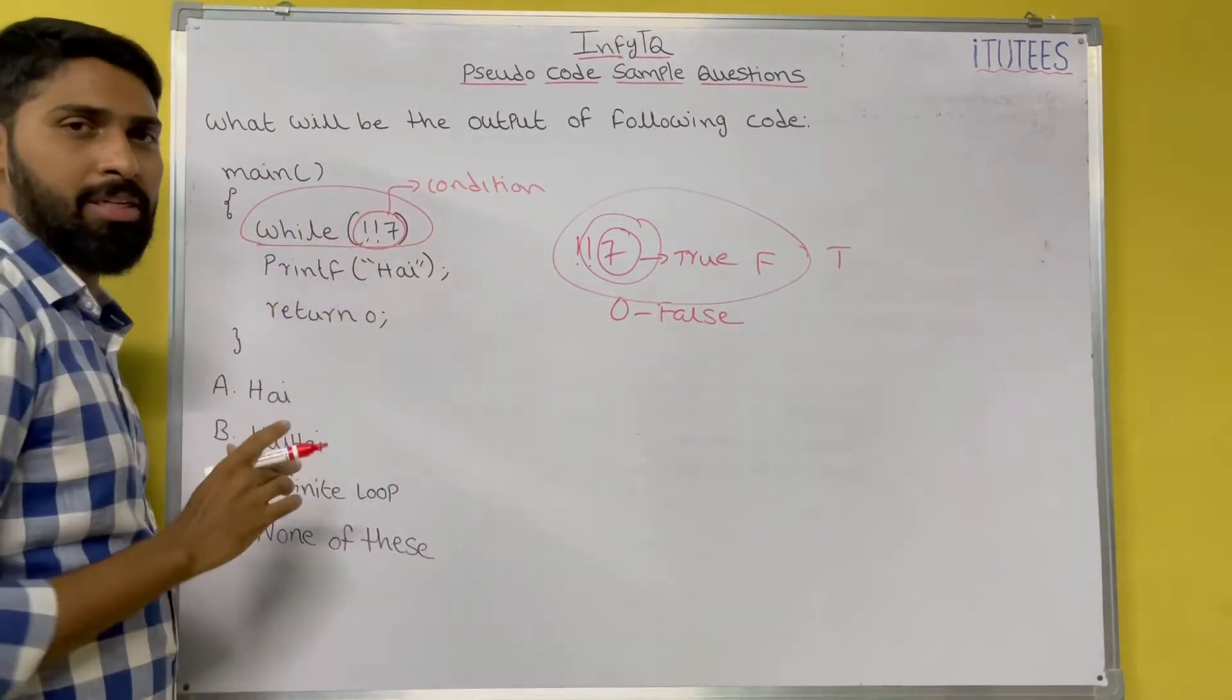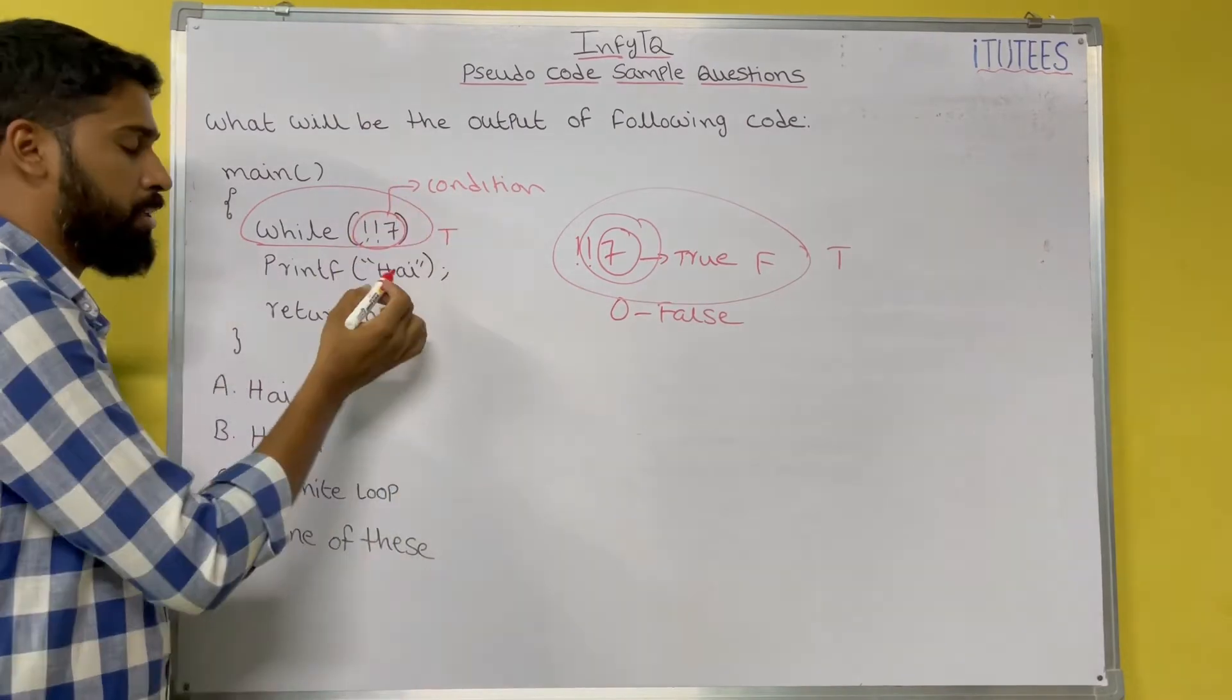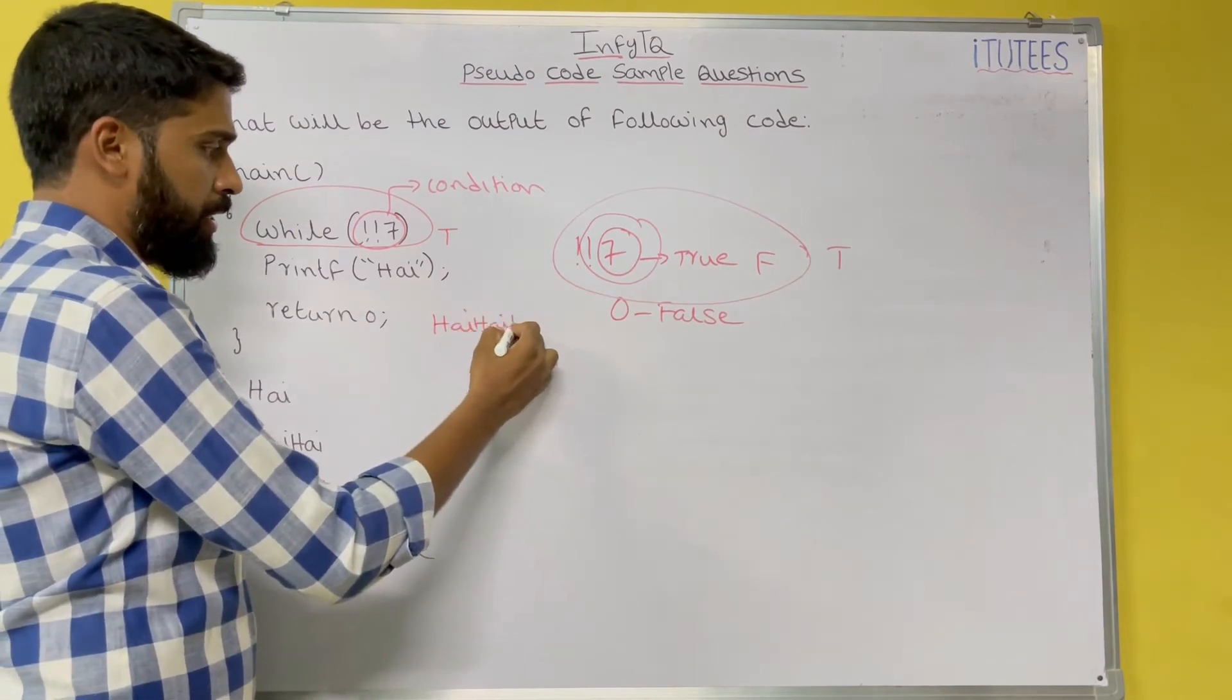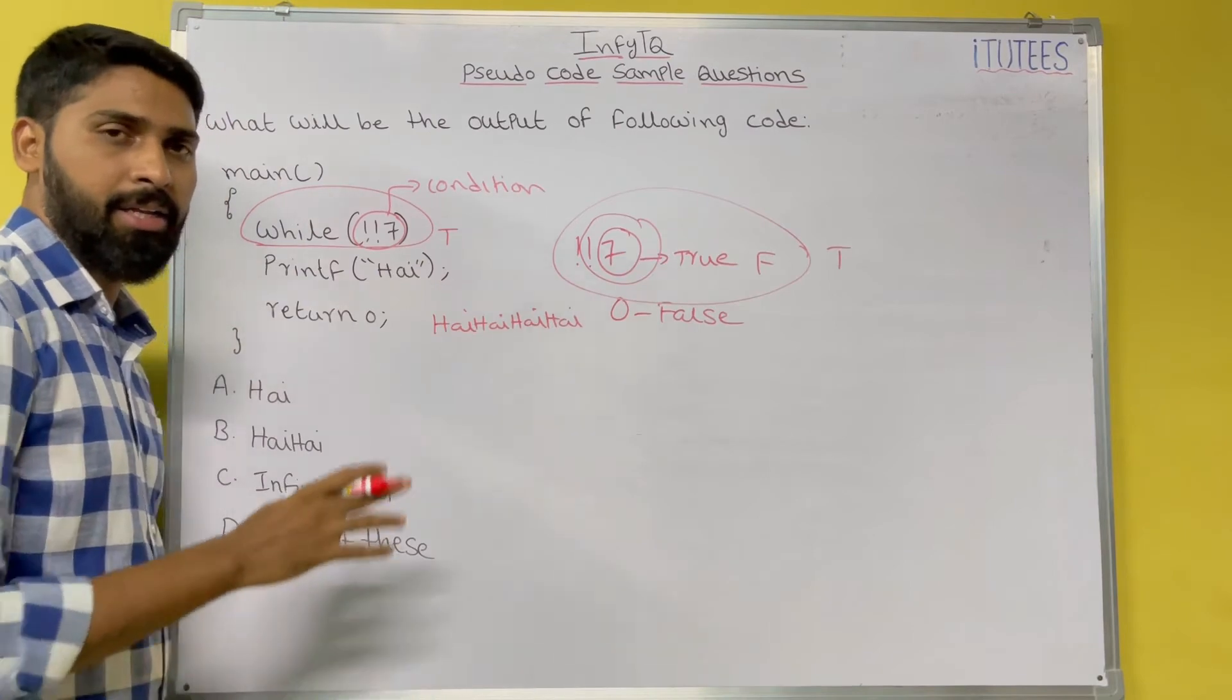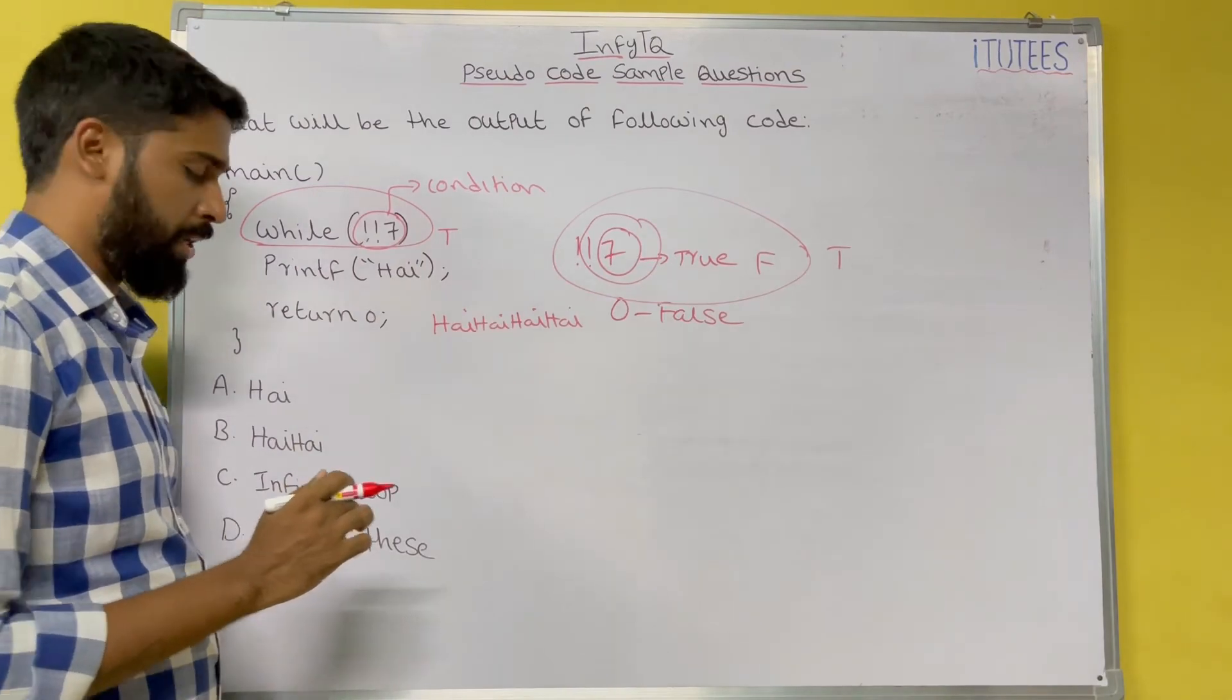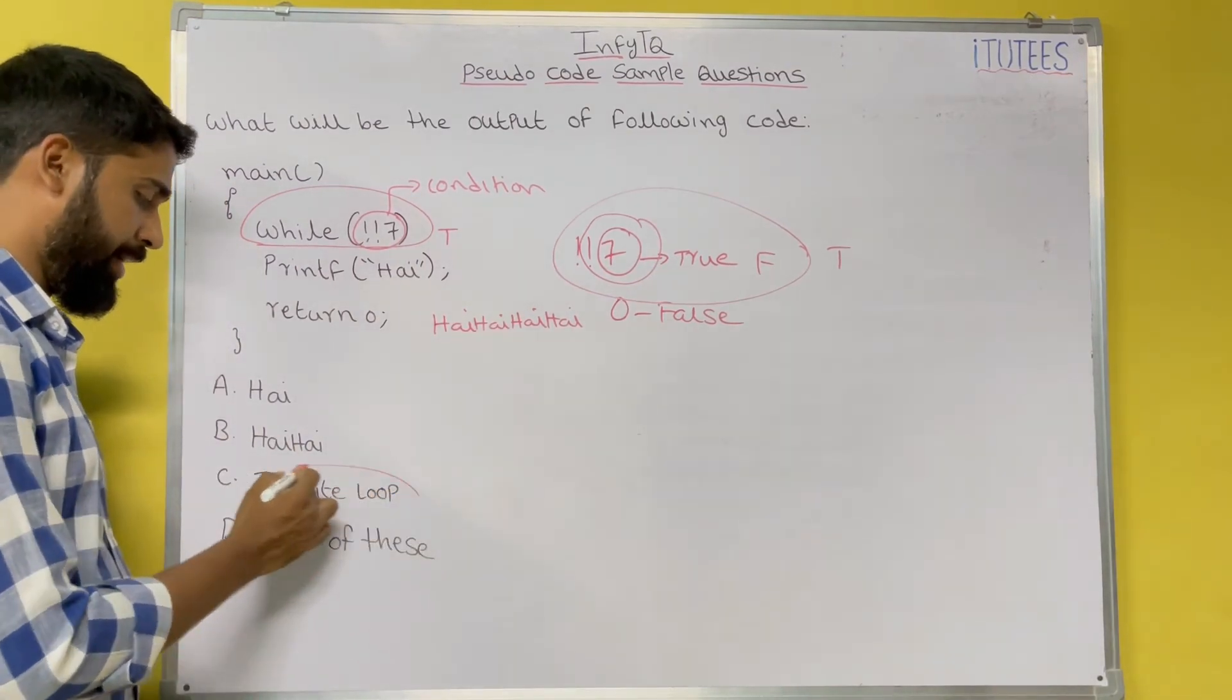So always this statement not not seven returns true. So it prints high in next iteration also high, in all the iterations it prints high and the loop does not terminate. So that loop we call as an infinite loop. So what is the answer? It is infinite loop.